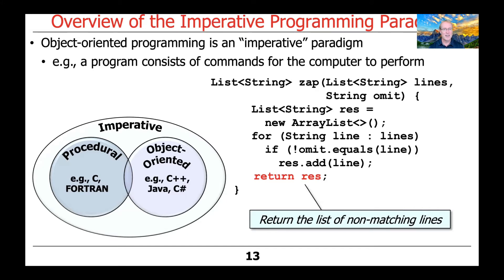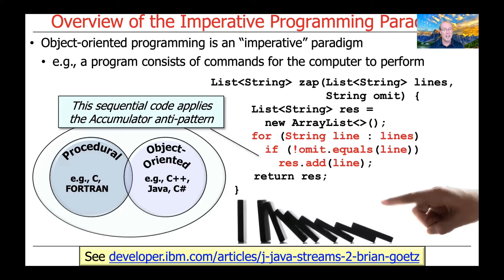This is classic Java imperative programming — you've probably all seen or written code very much like this. One thing to note is that this code applies the accumulator anti-pattern. You can read more about it via the link on the slide, but in essence it means this code is pretty much inherently sequential, and trying to make it run concurrently to take advantage of multi-core processors will be very complicated and require a lot of surgery to the code.